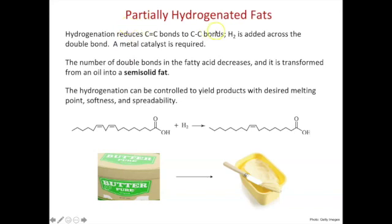In thinking about healthy fats and unhealthy fats, there's a subset called partially hydrogenated fats. These are created in a lab by a process called hydrogenation, and that process turns a double bond into a single bond using a metal catalyst.